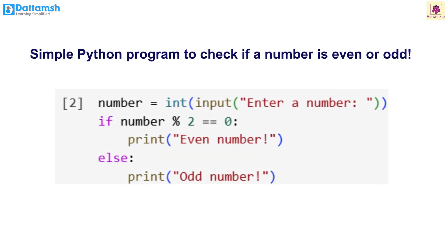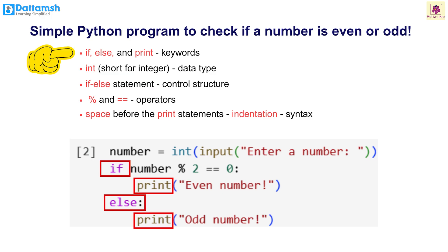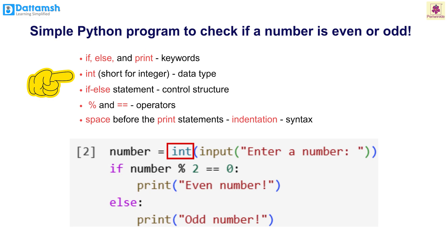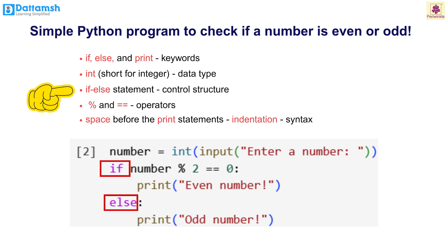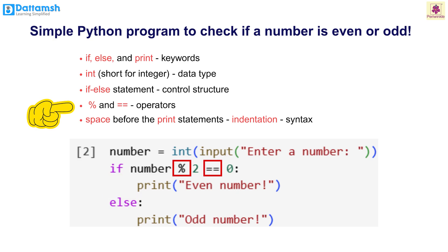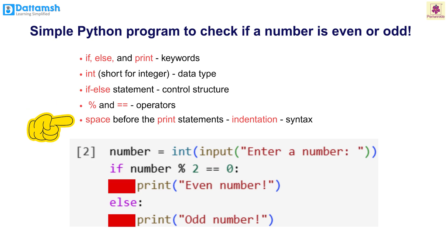Now let's look at a simple Python program to check if a number is even or odd. In this code, if, else, and print are keywords. The term int, short for integer, defines the data type. The if-else statement is the control structure that helps us decide whether the number is odd or even. Symbols like percentage and double equal are operators. Notice the space before the print statements — this is called indentation, which is a part of Python syntax and is necessary for the code to run correctly.